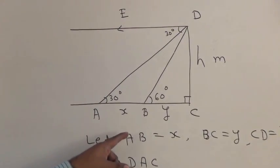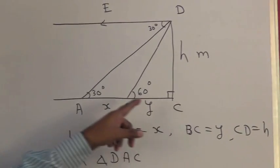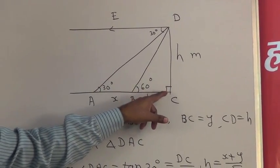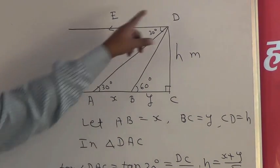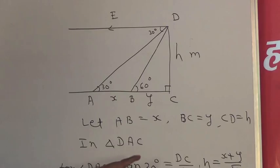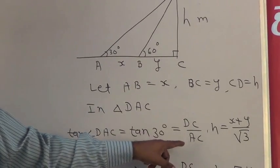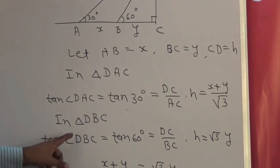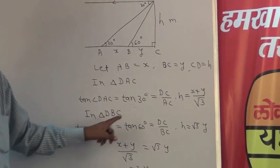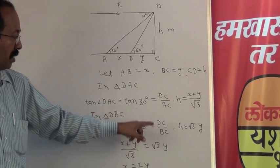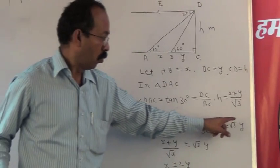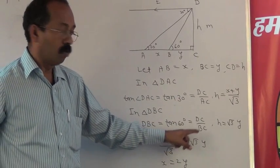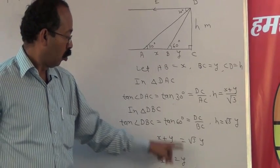Now let AB = x, let BC = y, and CD = h. C be the foot of the perpendicular. In triangle DAC, tan(DAC) = tan 30°, which is nothing but equal to DC/AC, so h = (x + y)/√3. In triangle DBC, tan(DBC) = tan 60° = DC/BC, so h = √3y. By solving these two sums, we get (x + y)/√3 = √3y. So value of x = 2y.